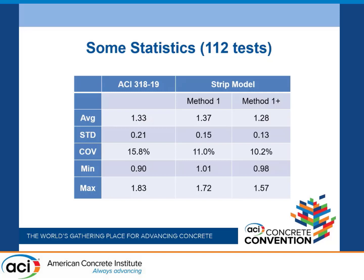Method one is already tighter than ACI on the same data set. And if you include the beneficial effect of the load correction, it tightens even more. While it's not proof, they are certainly indicative that tracking a load path through a structure is a very useful way of understanding tests, and perhaps identifying things in the future we might want to examine more fully.